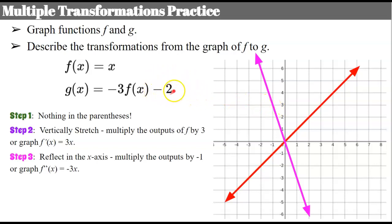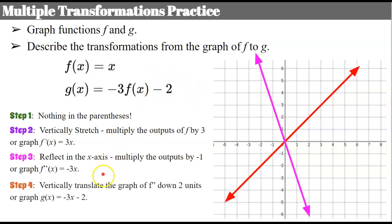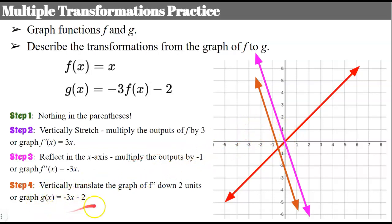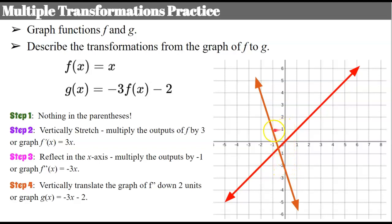And I have one more step. Step 4: I'm going to vertically translate the graph down, so all points on this line are going down. I'll have a y-intercept of negative two and a slope of negative three. So we've subtracted two. In slope-intercept form, our function g is negative three x minus two. Starting from negative two on the y-axis, rise three, run negative one — there we have our function g.